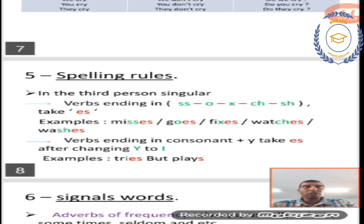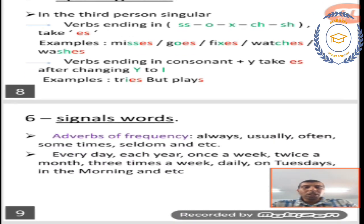Signal words. These are words that give us a signal to put and use present simple. These words help us very well to understand that we are obliged to use the present. These words are, first one, adverbs of frequency. Here we're talking about habits: always, usually, often, sometimes, seldom, et cetera. And we have other expressions, other markers, such as every day, every year, once a week, twice a month, three times a week, daily, on Tuesdays, on Fridays, on Saturdays, in the morning, on Wednesday morning, Wednesday afternoon, et cetera. Thank you for your attention. See you again.